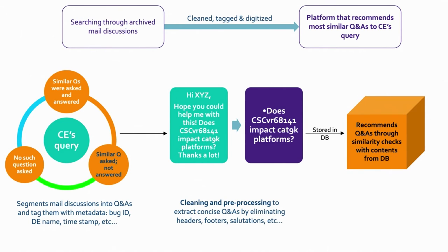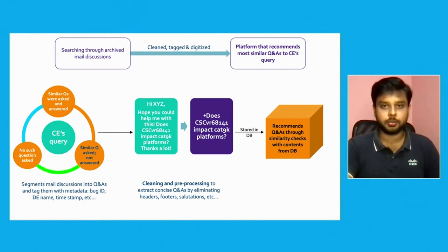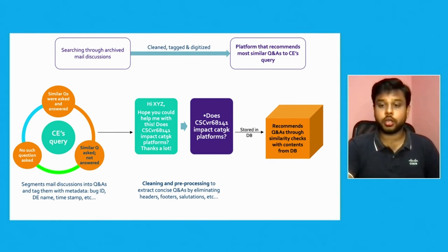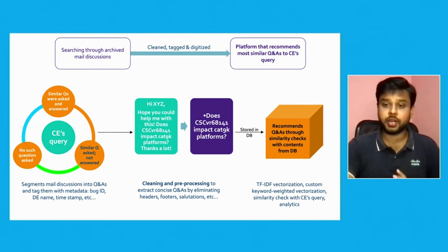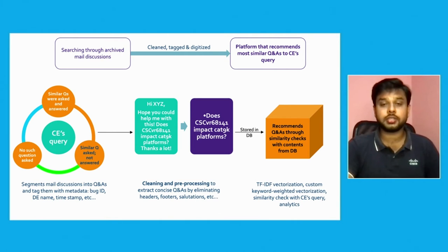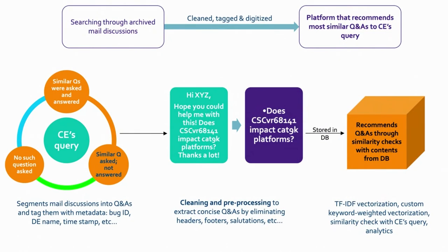When a consulting engineer queries Skybridge, the input is cleaned to extract only critical data — the bug ID, platform, and actual question — ignoring unwanted content. The system then searches the database using TF-IDF vectorization and custom keyword-weighted vectorization to perform similarity matching between the input question and the stored database entries. If a similar question with an answer exists, both the question and answer are returned. If only an unanswered question exists, the system performs analytics and triggers an email to the developer team.